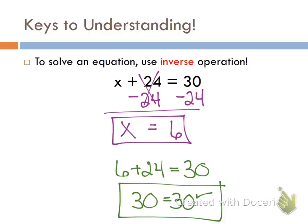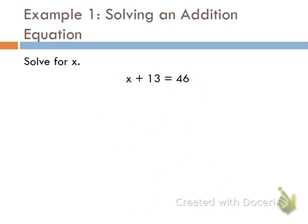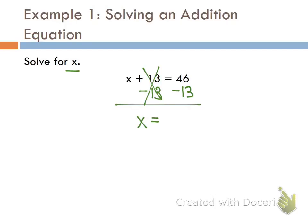Example one: x plus 13 equals 46. My goal is to get x by itself on one side of the equation. To get rid of positive 13, I subtract it. My rule says whatever I do to one side, I do the same exact thing to the other side of the equation, with an equal bar underneath — we're writing these vertically. I visibly show that my 13s cancel, and I can clearly see x equals 33.